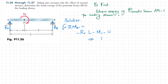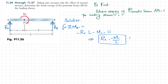From this equation, R_A equals M0 over L. However, the negative result means R_A is actually directed downward — our initially assumed upward direction was incorrect. We must correct this and take R_A as downward.